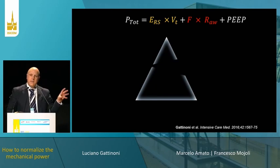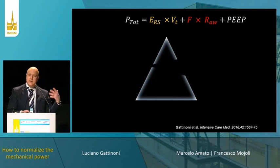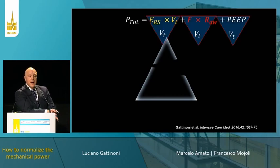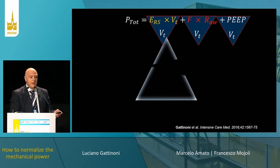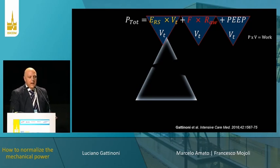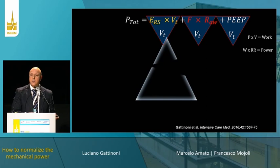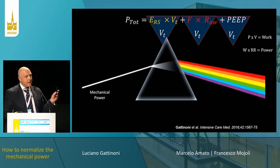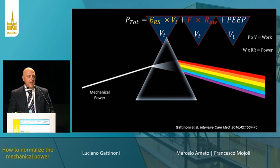From that initial standard equation, we can do a series of steps. To each term of pressure, we can add or multiply the volume. If we multiply each term by a volume, what we have is pressure times volume, which is work. And if we multiply by the rate, we have power. So that's taking the many components of mechanical ventilation and essentially transforming them into one unique measure, which is mechanical power.